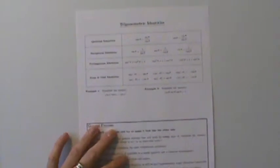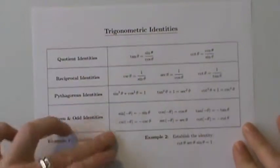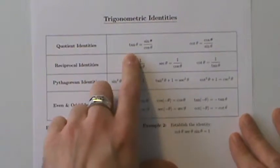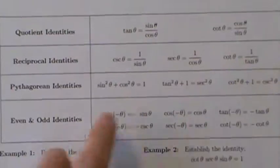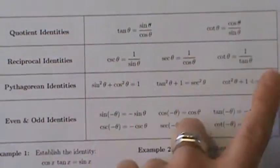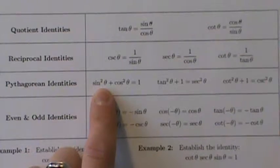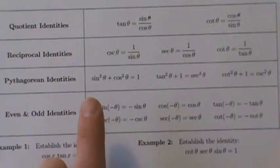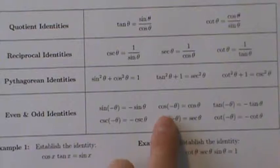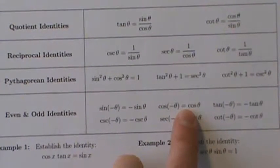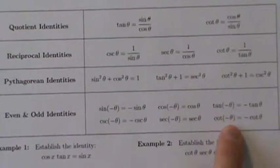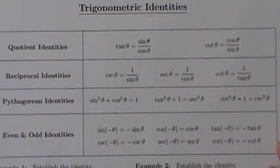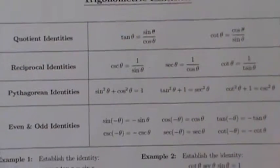So what we have in this packet, besides a bunch of examples, is a brief review of the basic identities we talked about much earlier. There's the quotient identities: tangent is sine divided by cosine, cotangent is cosine divided by sine. The reciprocal identities: cosecant is 1 over sine, and so on. Pythagorean identities: sine squared plus cosine squared equals 1, and two related ones. The even and odd identities: sine is odd so sine of negative theta equals negative sine of theta; cosine is even so cosine of negative theta equals cosine of theta; tangent, cosecant, and cotangent are also odd; and secant is even.